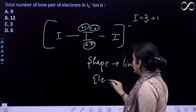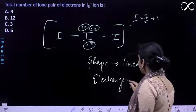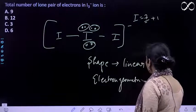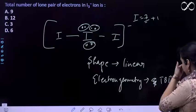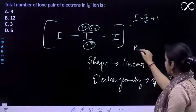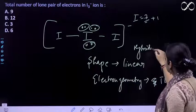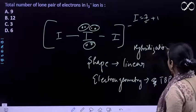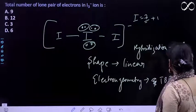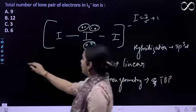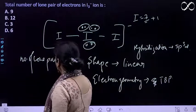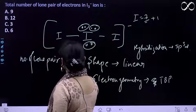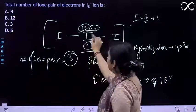That is your basically TBP, and hybridization is SP³D. And number of lone pairs is three on this iodine.